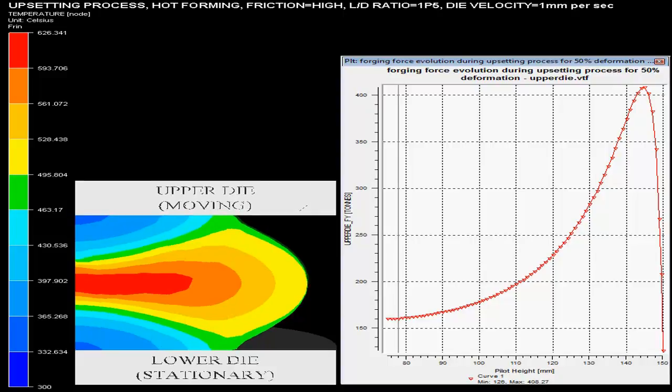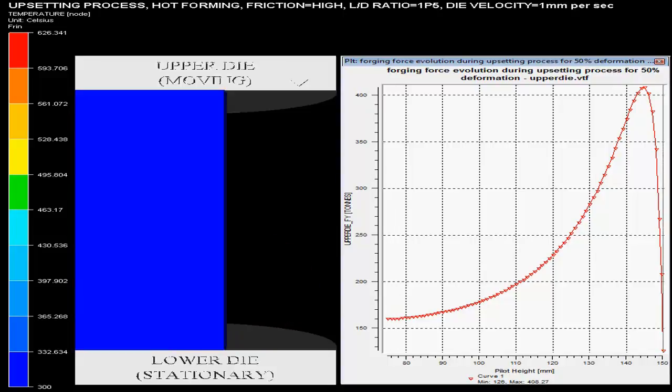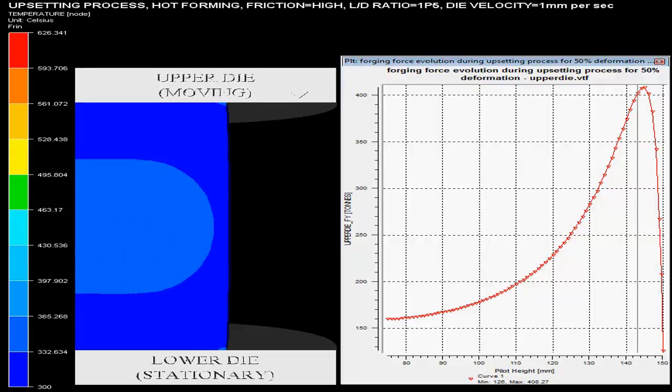Bottom die is rigid and it is not moving. On the other hand upper die is moving in downward direction with velocity 1 mm per second.